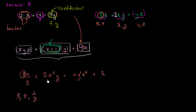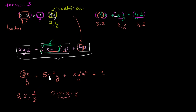For the next term, 5x²y, you might be tempted to say it has four factors — five, x, x, and y — since x squared equals x times x. But the convention most people use is that x squared with x as the base is just considered one factor. So traditionally, people say this term has three factors: five, x squared, and y. And the coefficient is five.